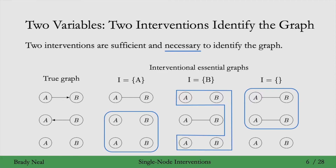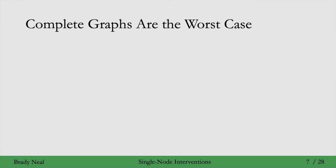We're now going to be generalizing this to talk about how many interventions are sufficient and necessary to identify general graphs for arbitrary numbers of variables. Something useful for figuring out how many interventions are necessary is to know what the worst case graph structure is, and that's complete graphs.